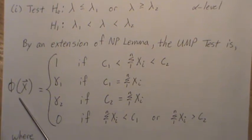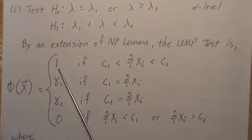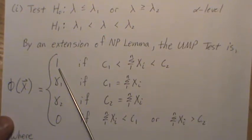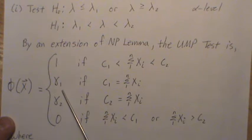And by that extension this is the uniformly most powerful test for this two-sided test. So our test function is phi. It equals 1 which means you reject the null hypothesis with probability 1.